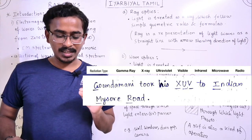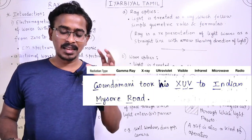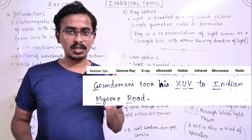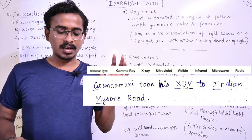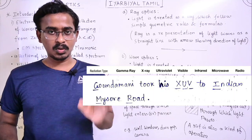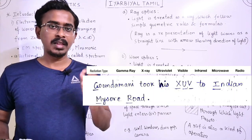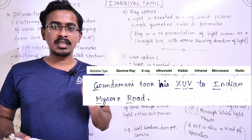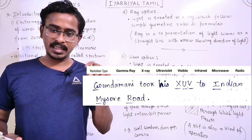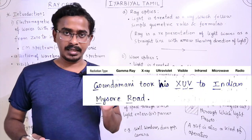The mnemonic is: 'Goundamani took his XUV to Indian Mysore road.' From the first letters: G = Gamma, X = X-Ray, U = Ultraviolet, V = Visible light. This gives you the order of the electromagnetic spectrum from highest to lowest frequency.